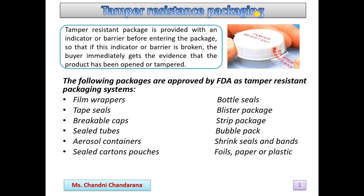So what is tamper resistant packaging? A tamper resistant package is provided with an indicator or barrier before entering the package, so that if this indicator or barrier is broken, the buyer immediately gets evidence that the product has been opened or tampered.